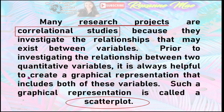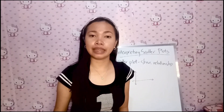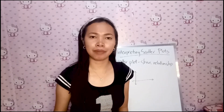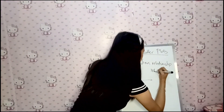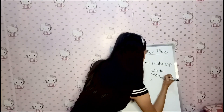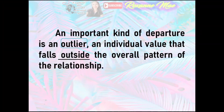Many research projects are correlational studies because they investigate the relationships that may exist between variables. Prior to investigating the relationship between two quantitative variables, it is always helpful to create a graphical representation that includes both of these variables. Such a graphical representation is called a scatterplot. As in any graph of data, the overall pattern of a scatterplot can be described by its form, direction, and strength of the relationship. An important kind of departure is an outlier, an individual value that falls outside the overall pattern of the relationship.